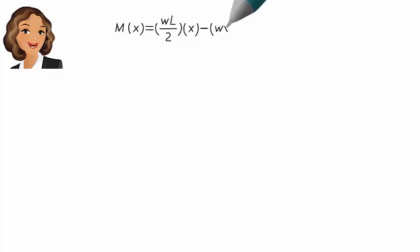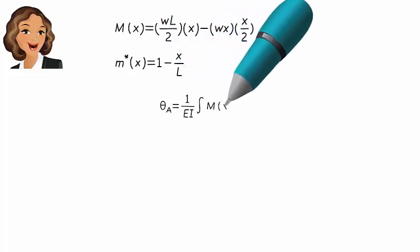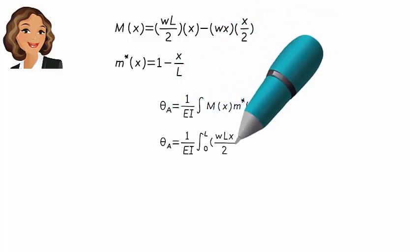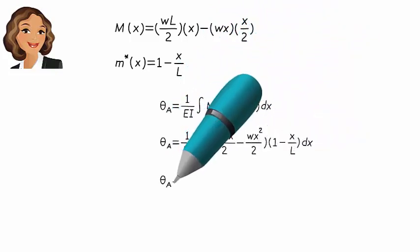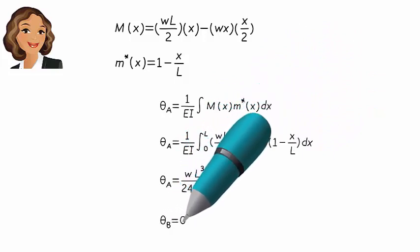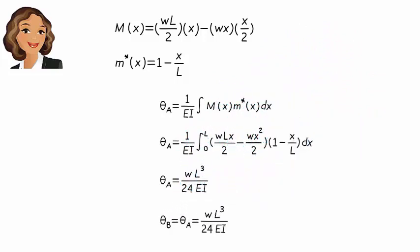Since theta A is the integral of mx times m star x over EI, we get, the beam's bending moment at A.